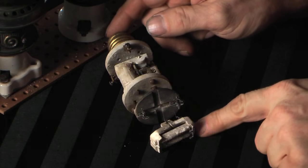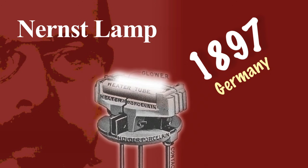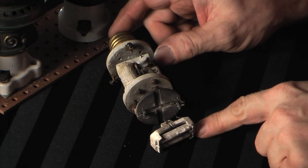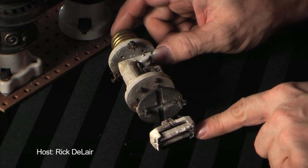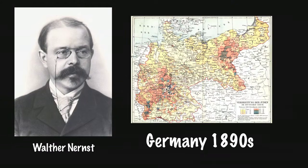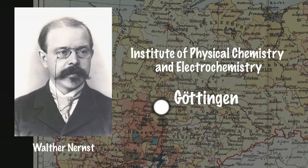What we have here is a Nernst lamp, and this is actually a very interesting type of incandescent lamp. It was invented by Walther Nernst in 1897 and was produced probably until 1910 or 1915, somewhere in that range.